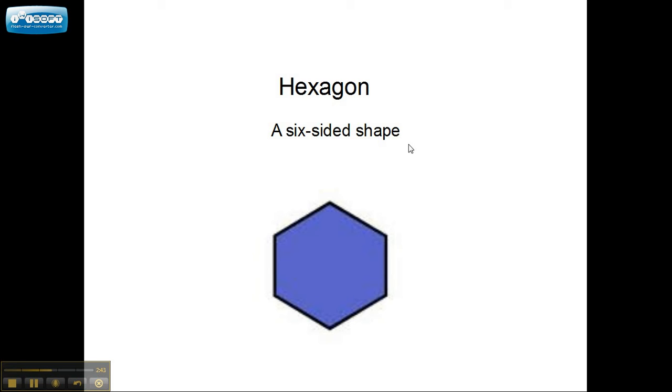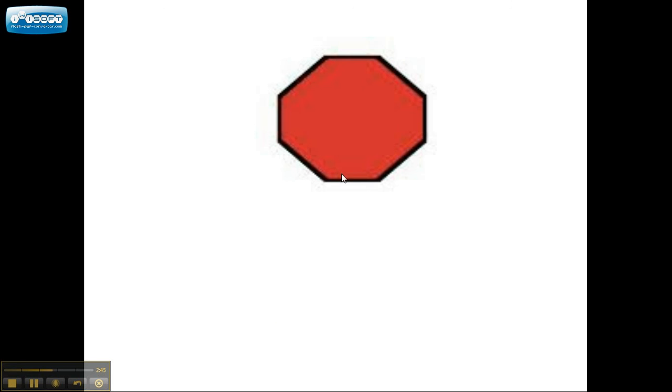There is a seven-sided shape. We're not going to worry about it right now, but we will worry about this one. An eight-sided shape. And we're all familiar with this. It looks like a stop sign. It is an octagon. An eight-sided shape. Next time you come to a stop sign, count the sides. You'll probably come up with eight.